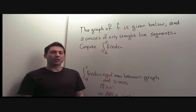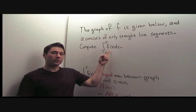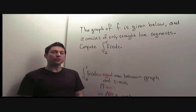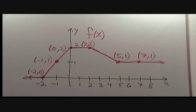There are two ways to compute this definite integral. The first way is algebraically using anti-differentiation. To do this, we would need to write a formula for each of the line segments that make up the graph of f.